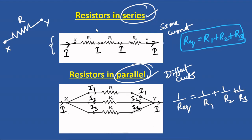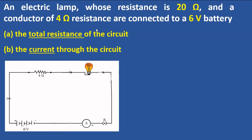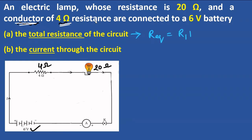Example: an electric lamp has resistance 20 ohms and a conductor has resistance 4 ohms connected in series with a 6-volt battery. First find the total resistance. R_eq = R1 + R2 = 4 + 20 = 24 ohms.